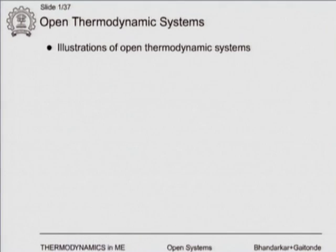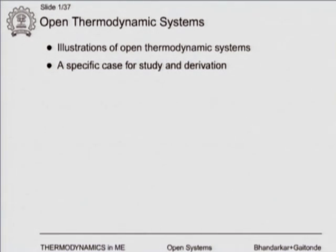Open systems are something where we allow mass to cross the boundaries — either mass can be coming in, or mass can be going out, or maybe even both. Initially we will have a few illustrations of open thermodynamic systems, then we will take a specific system and derive equations, and come up with a very general equation which we can use later.